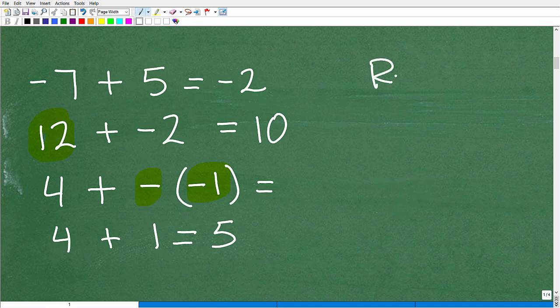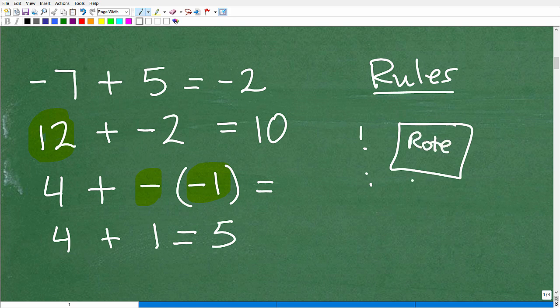And of course, we do have some rules that you can follow to learn how to add positive and negative numbers. But I'm not a big fan of rules. We need rules, like, hey, if you see this, do this, and this, and this. The thing is with rules, it's like a flash card. It requires a lot of rote memory.